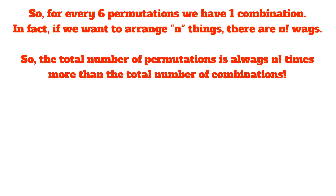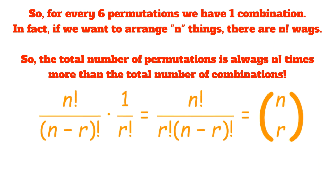So for every 6 permutations, we have 1 combination. In fact, if we want to arrange n things, there are always n factorial ways. So the total number of permutations is always n factorial times more than the total number of combinations. Thus, we can take our formula for the total number of permutations — n factorial divided by (n minus r) factorial — and divide by r factorial, which gives us our new formula for combinations: n factorial divided by r factorial times (n minus r) factorial. This is also expressed as the notation pronounced 'n choose r'.